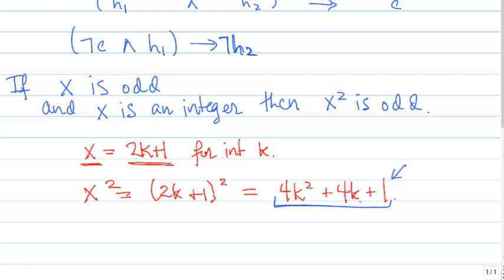And now I want to take the rest of this expression and re-express it as 2 times an integer. So I'm going to factor out a 2 from these two terms, 4k² and 4k.